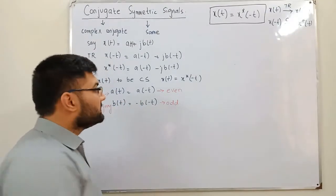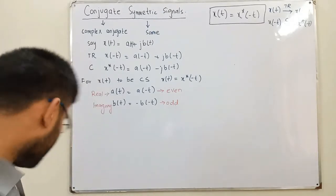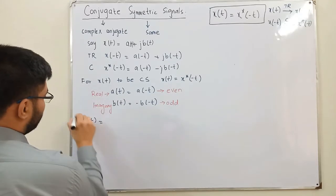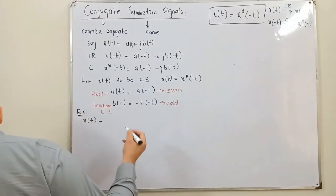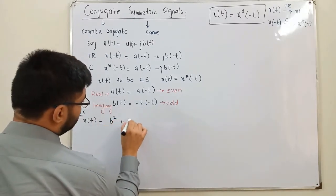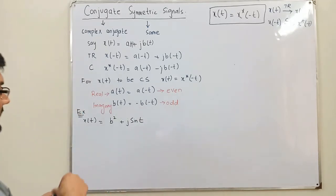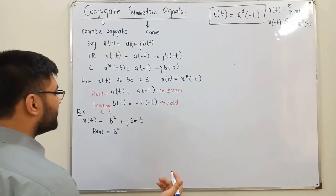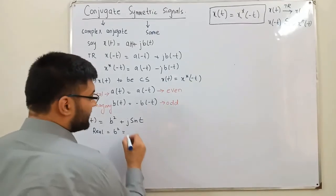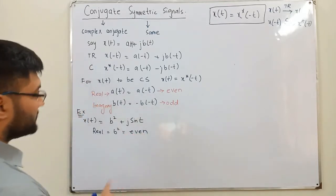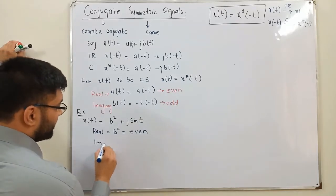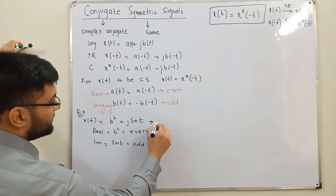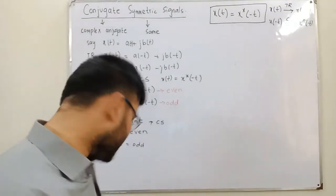To summarize: for a conjugate symmetric signal, the real part is even and the imaginary part is odd. For example, x(t) = t² + j·sin(t). The real part t² is even, and sin(t) is an odd function, so this signal is conjugate symmetric.